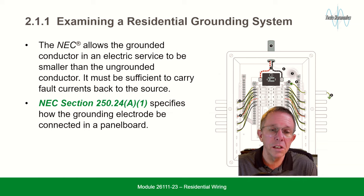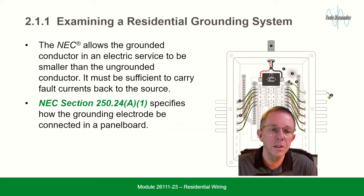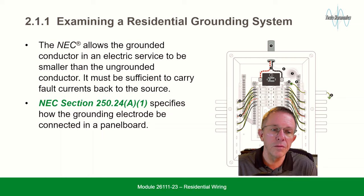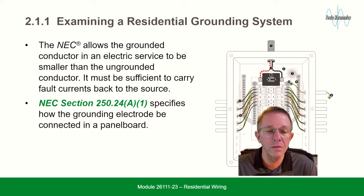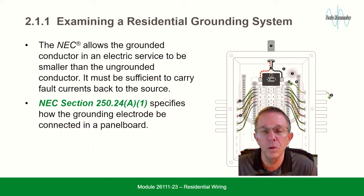Examining a residential grounding system: the NEC allows the grounded conductor at the electric service to be smaller than the ungrounded conductor. It must be sufficient to carry the fault current back to the source. NEC section 250.24 specifies how the grounding electrode must be connected in a panelboard.